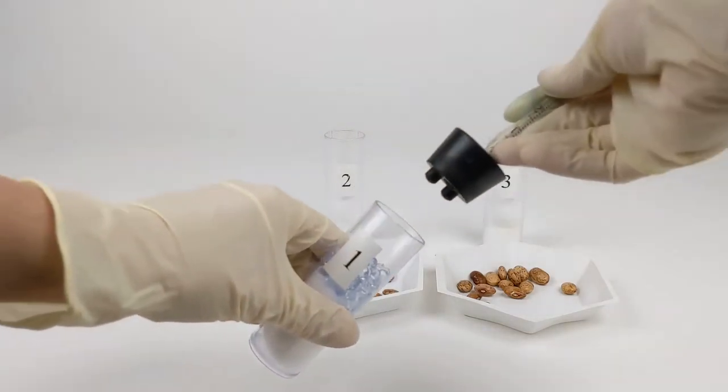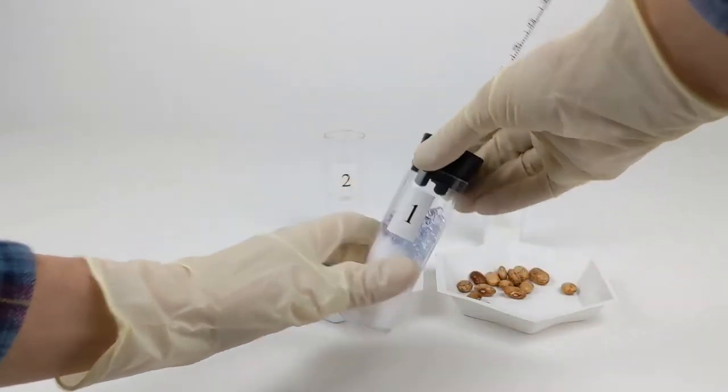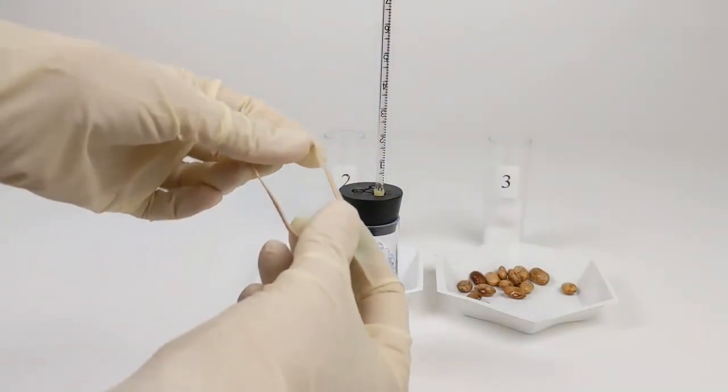Next we're going to put the pipette and stopper assembly on top of the vial. This is a rubber stopper that we're pressing down hard to make sure is in place.